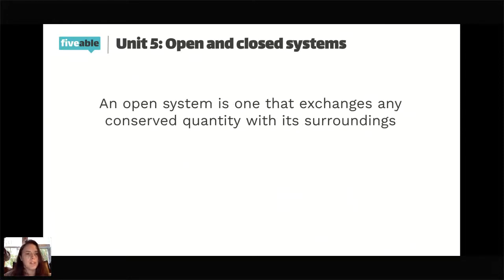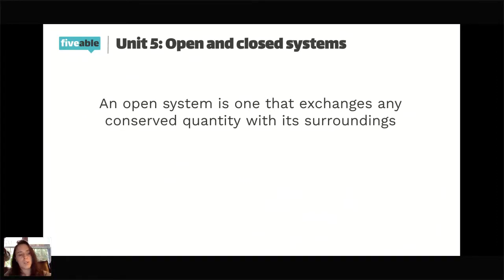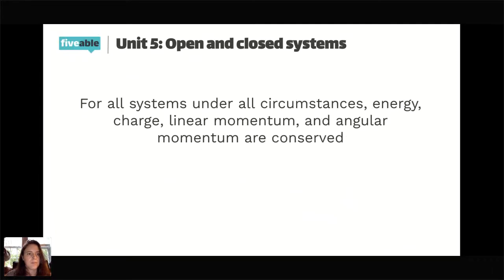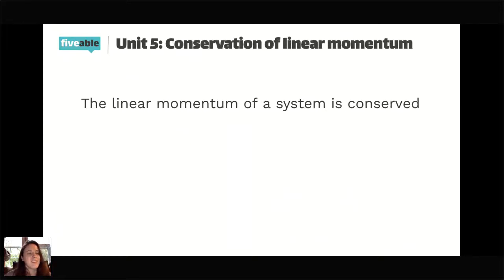An open system is one that exchanges any conserved quantity with its surroundings. You can put energy in or take energy out, but the total is the same. Or you can apply a force to change the momentum, but the total is still the same. The linear momentum of a system is conserved — and that's where we get into the conservation of linear momentum.